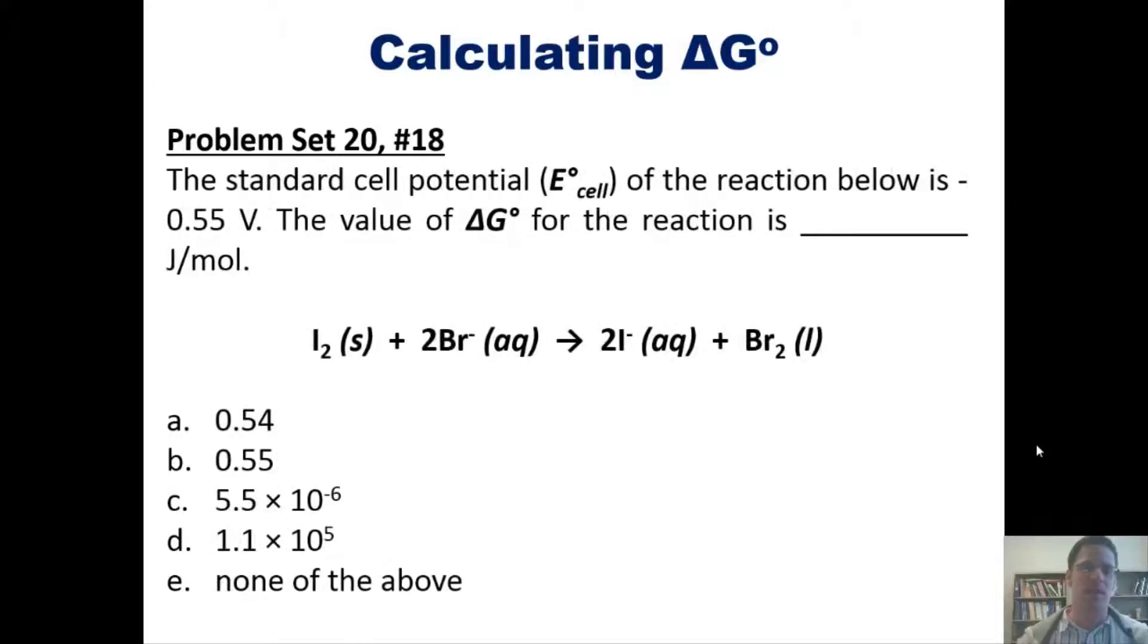Here's another one. The standard cell potential for this reaction is 0.55 volts. The value of Delta G for this reaction is what? All right, let's go on.